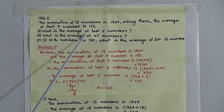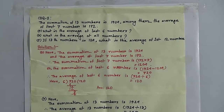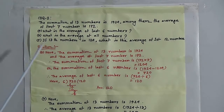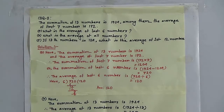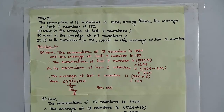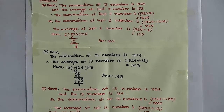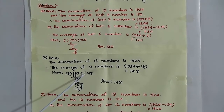Question B: what is the average of all numbers? The question gives the information that the summation of 13 numbers is 1924. Notice that the number of quantities is 13 and the summation of these quantities is 1924. So we can easily find the average of 13 numbers. We divide 1924 by 13 and we get the average of 13 numbers, which is 148.